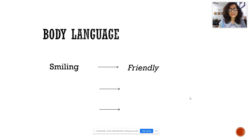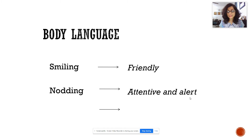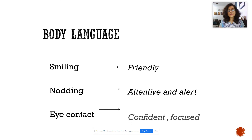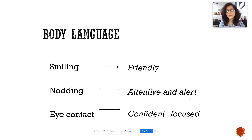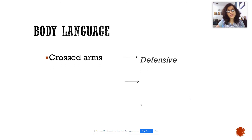Smiling could be friendly; nodding could be attentive and alert. When you're nodding your head, it signals that you're paying attention. Eye contact means you're confident, focused, and not afraid to look your audience in the eye. Smiling, nodding, and eye contact — these three gestures are very important when making a presentation because they send forth a positive vibe and create an aura of positivity around you.